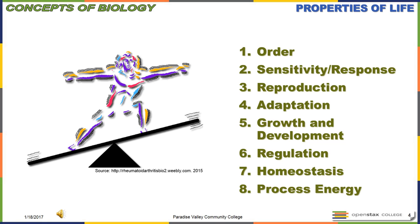Finally, number eight: all organisms of life are going to have to be able to process energy. If you're not processing energy, you're out of whack from your homeostasis — a little unbalanced. You might not grow and develop appropriately, you might not be able to adapt readily or reproduce, and you might not be able to sense change and respond to it. So these eight criteria are what make up life as we know it and as we consider it in biology.